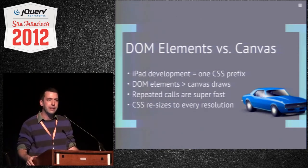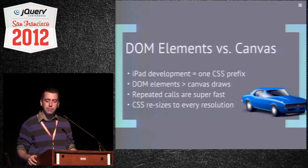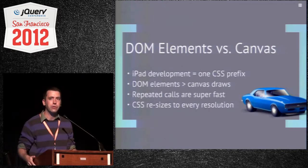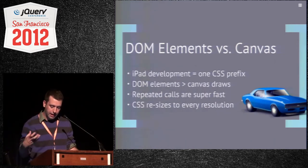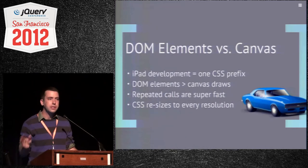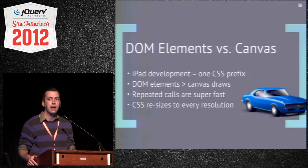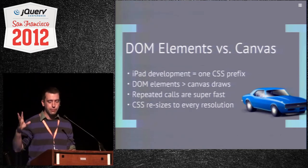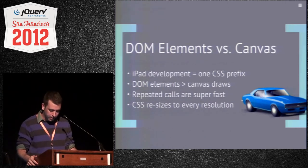Just having the one prefix is really important for WebKit transitions. DOM elements — move them around, they're much easier than trying to move stuff on the canvas, and you can really do a lot with them once you get into the CSS stuff. Repeating calls on the canvas is actually super fast — when I drag stuff up onto the screen it faded into that rainbow color-y kind of thing. That was 20 draw calls onto the canvas, but it's only the one image repeated on top of itself.